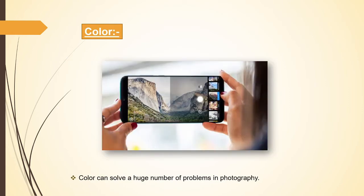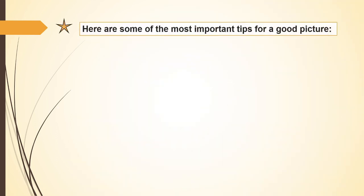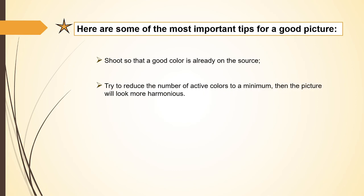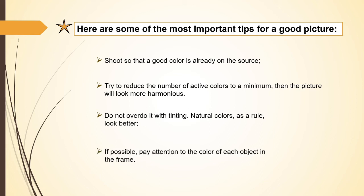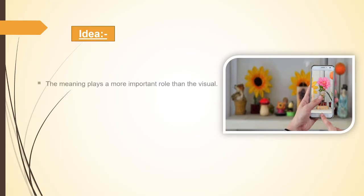The next point is color. Color can solve a huge number of problems in photography. Here are some tips for a good picture: shoot so that good color is already present in the source. Try to reduce the number of active colors to a minimum — the picture will look more harmonious. It is best if there is one dominant shade in the frame. If there are several colors, try to make each added color qualitatively less prominent than the previous one. Natural colors as a rule look better, so pay attention to the color of each object in the frame.